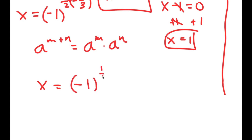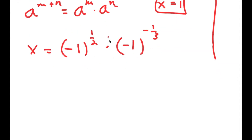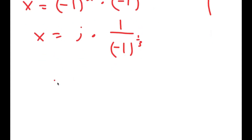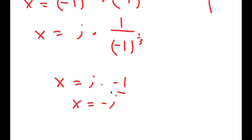Negative 1 to the power of 1 half is the square root of negative 1, which is equal to i. So we get i times negative 1 to the power of negative 1 over 3, which is the same thing as 1 over negative 1 to the power of 1 over 3, which is equal to negative 1. So I get i times negative 1, which is equal to negative i — my final solution.